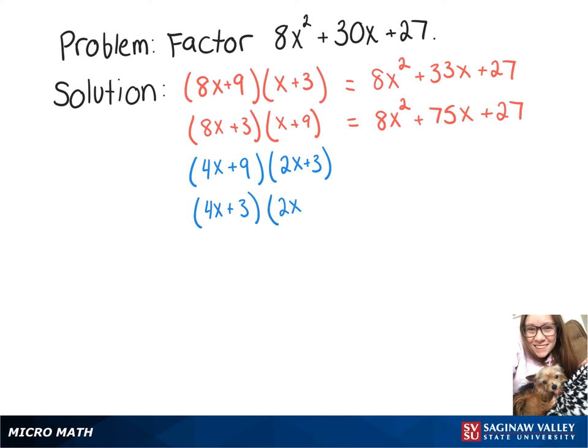So let's test those out and see what we get. So this one, when we FOIL it out, will give us 8x squared plus 30x plus 27.